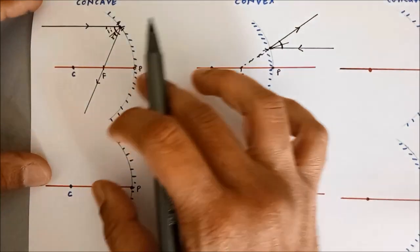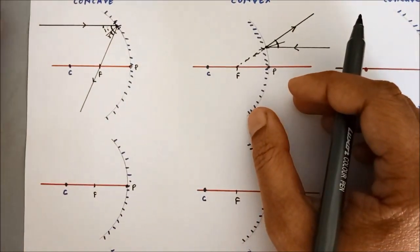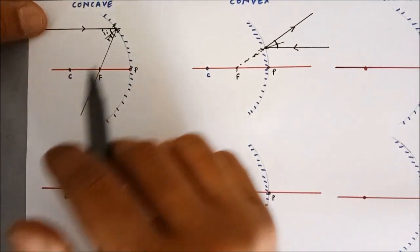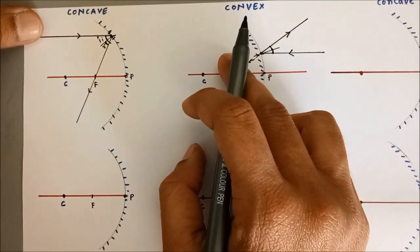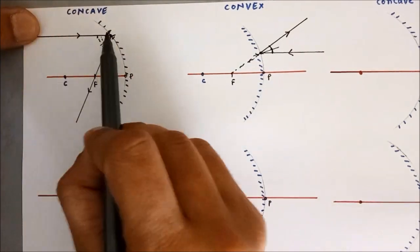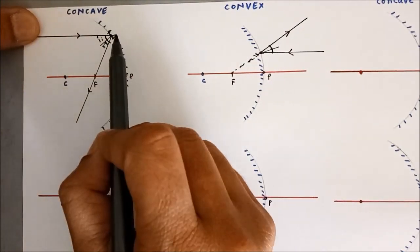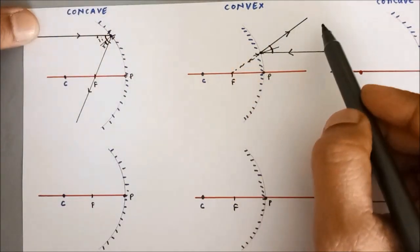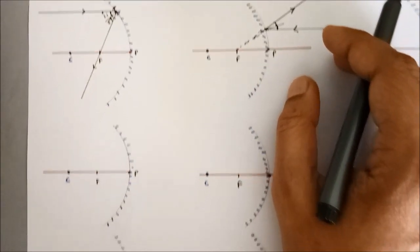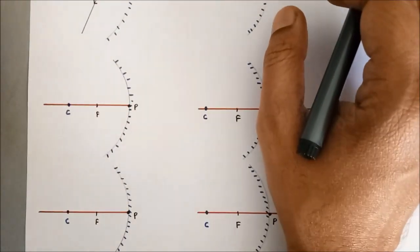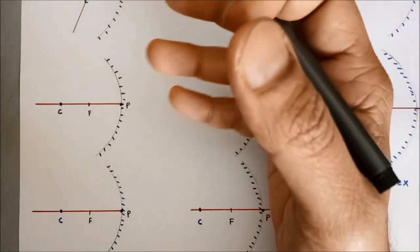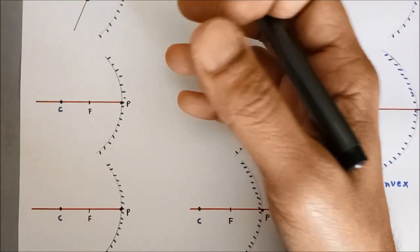By using simple rules of reflection, we have studied the first rule for image formation: any ray parallel to the principal axis, after reflection, passes through the focus or appears to be passing through focus. These sets of rules are common for both the convex and the concave mirror.